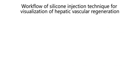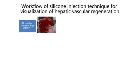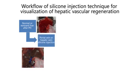The workflow starts with contrasting the vascular tree. First, we expose the liver, either a normal or a resected one. Then, we inject a polymerizing silicon contrast compound into either the portal vein or hepatic vein, depending on the vascular system of interest.